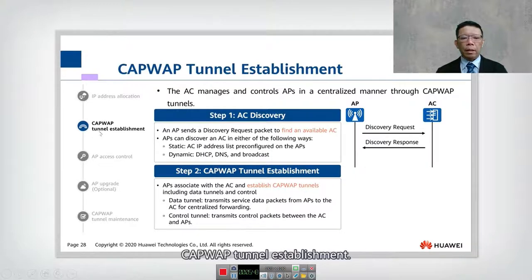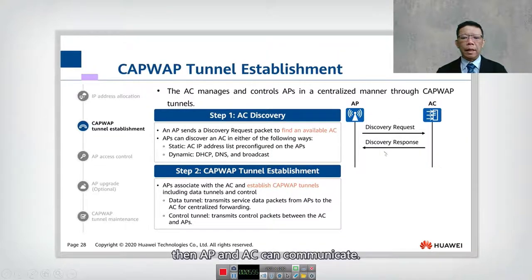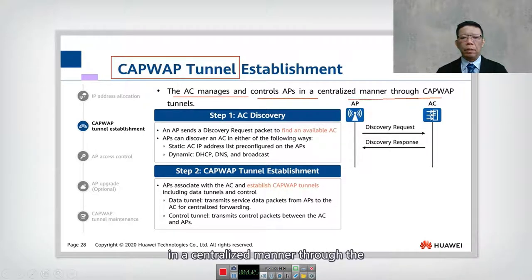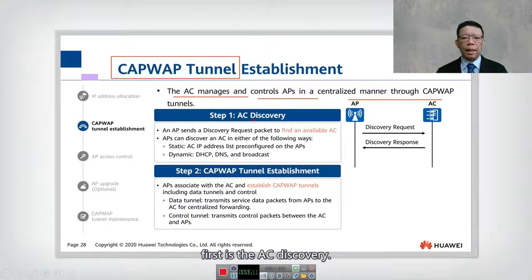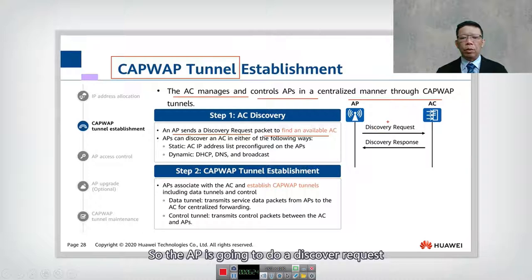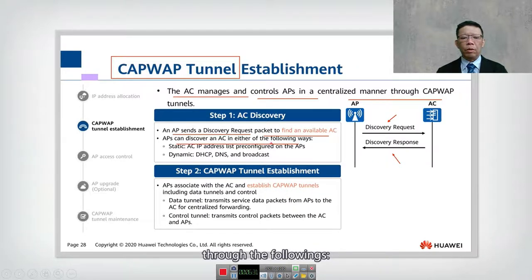Next, we look at CAPWAP tunnel establishment. Once the AP has an IP address, the AP and AC can communicate. The AC manages and controls APs in a centralized manner through the CAPWAP tunnel. There are two stages: first is AC discovery, where the AP sends a discovery request packet to find an available AC. Since a network can have more than one access controller, the AP performs a discovery request and the AC responds.